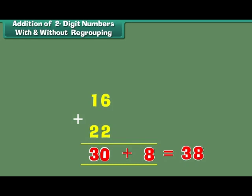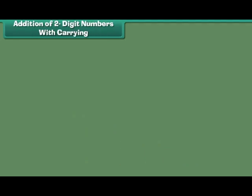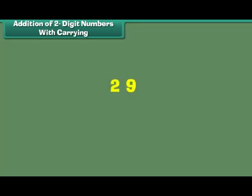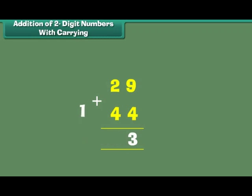Therefore, 16 plus 22 is equal to 38. Addition of 2 digit numbers with carrying. Another technique of adding two 2-digit numbers is through carrying. Let us understand it with an example: 29 plus 44. The digits at the 1s place are 9 and 4. 9 plus 4 is equal to 13. Write 3 at the 1s place and carry over 1 to the 10s place. The digits at the 10s place are 1, 2 and 4. 1 plus 2 plus 4 is equal to 7. Therefore, 29 plus 44 is equal to 73.